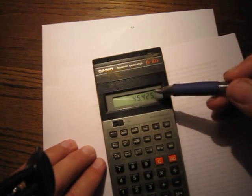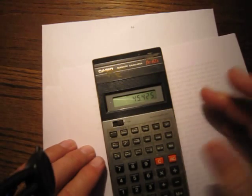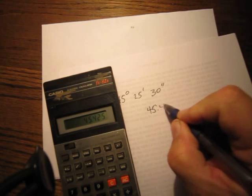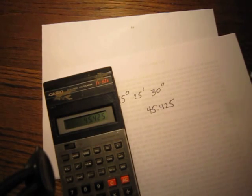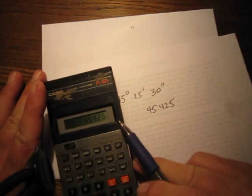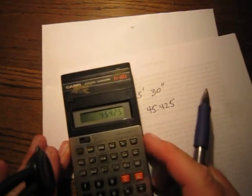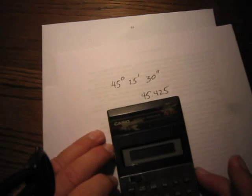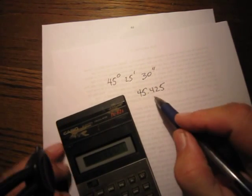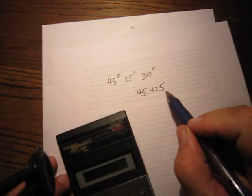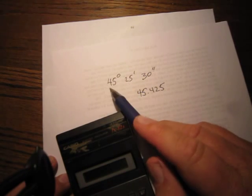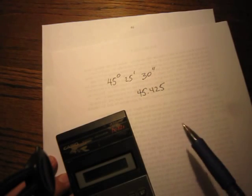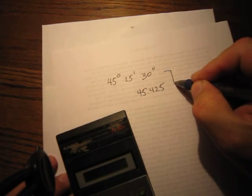Alright, now, you'll see once again, it says 45.425. This calculator converts it to decimal places. Now, 45.425 is the very same thing as 45 degrees, 25 minutes, and 30 seconds. They are the same.